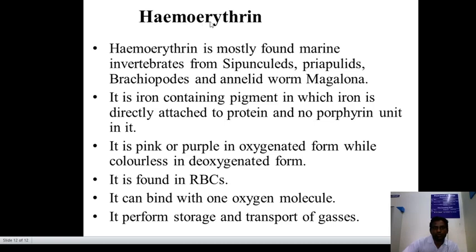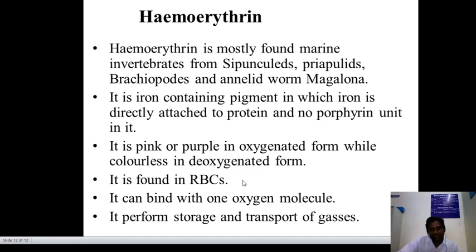The last respiratory pigment is hemerythrin. It is mostly found in marine invertebrates from Sipuncula, Brachiopoda, and annelid worms. It is an iron-containing pigment in which iron is directly attached to the protein and no porphyrin unit is present — unlike hemoglobin which has a porphyrin unit. It is pink or purple in oxygenated form and colorless in deoxygenated form. It is found in RBCs, can bind with one oxygen molecule, and performs storage and transfer of gases.